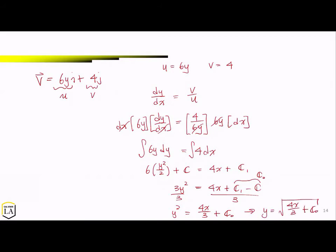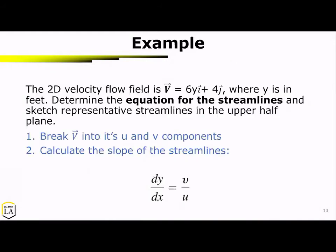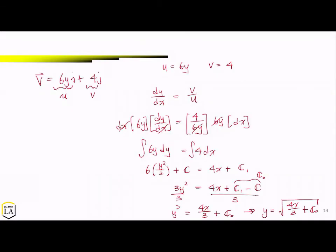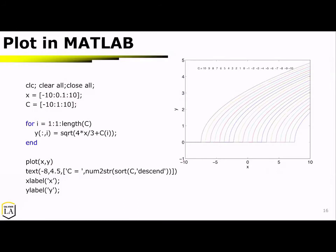The problem asks us to sketch representative streamlines in the upper half plane. I'm going to use the square root form and plug it into MATLAB. The constants range from negative 10 to 10, incrementing by 1, and I generated a simple loop to loop through those constants to get my y field. This is an example of using MATLAB as a useful tool to visualize the streamlines.